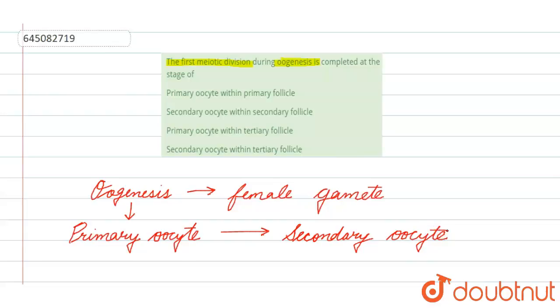The primary oocyte will be converted to secondary oocyte only if it is mature, so this will be present in tertiary follicle.